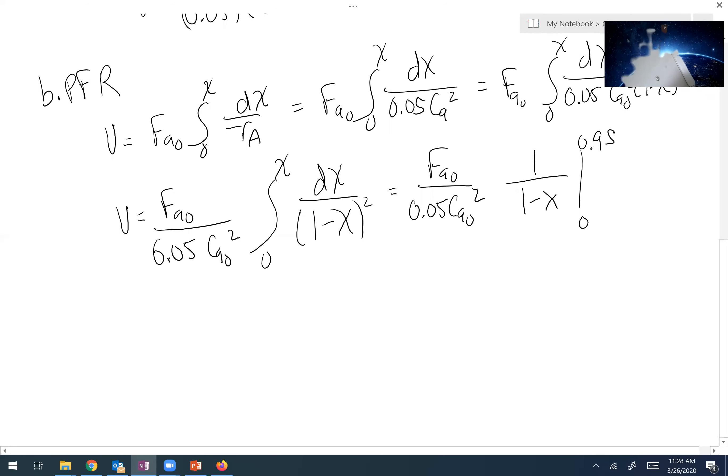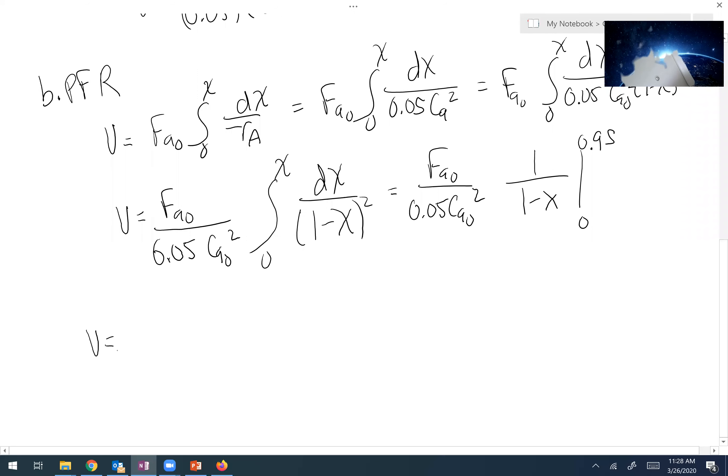So plugging all of that in, my volume becomes 80 over 0.05 times 10 squared times negative [1 over (1 minus X)] from 0 to 0.95, which is 1 over 0.95 minus 1, which gives me a solution of about 304 liters.